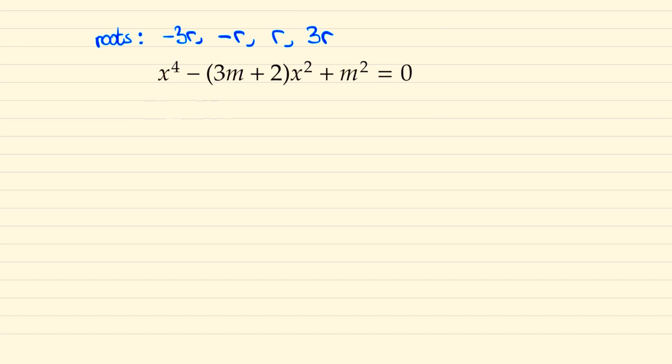And now given that we know all four roots to our equation we can factorize it as x minus r, x plus r, x minus 3r and x plus 3r. Which is the same thing as writing it as x squared minus r squared and x squared minus 9r squared.